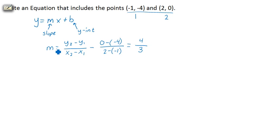So we've got 4 over 3 as our slope. Let's go ahead and plug that in. Now we've got y equals 4 thirds x plus b.